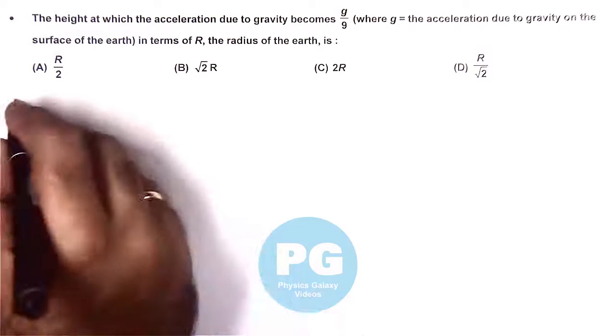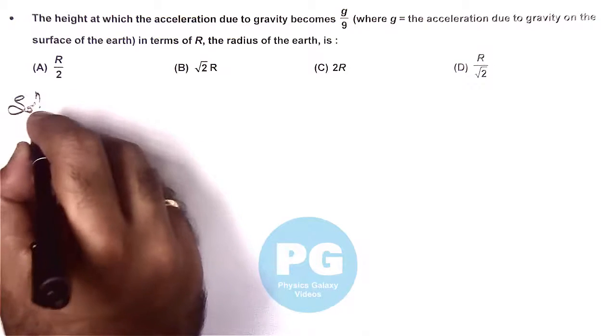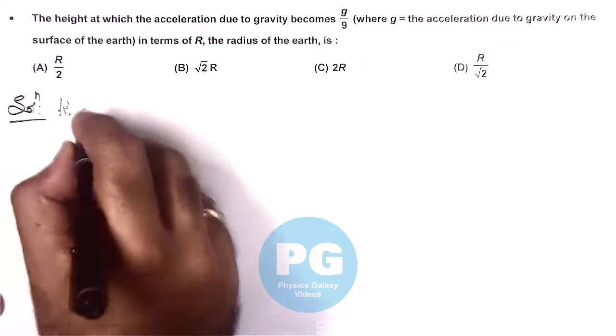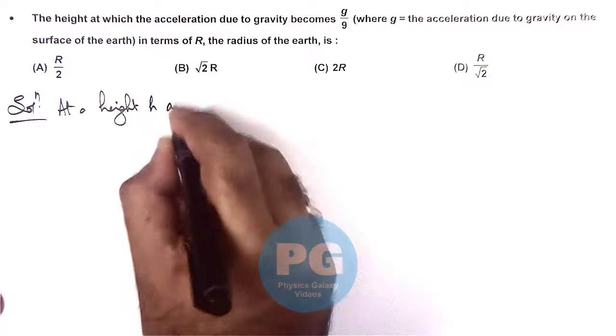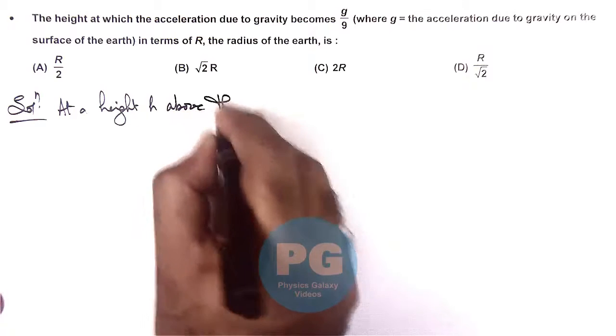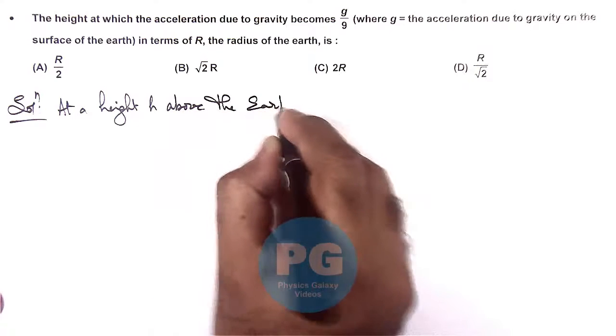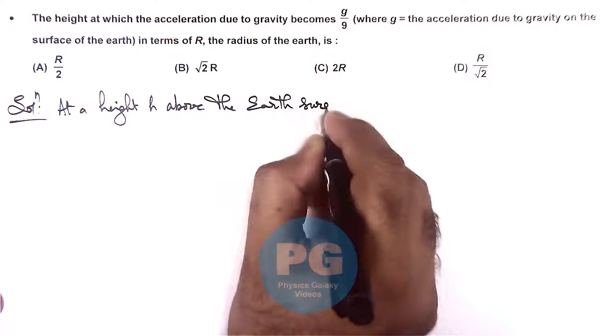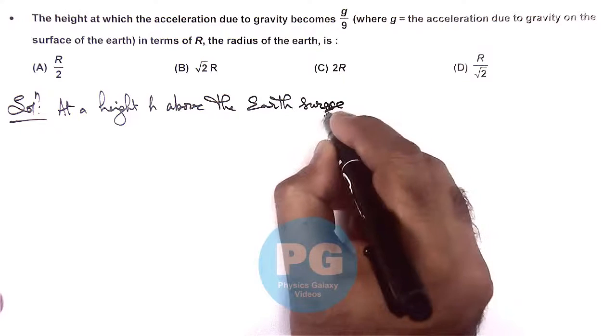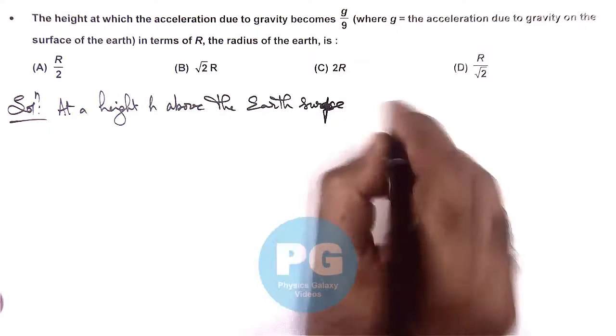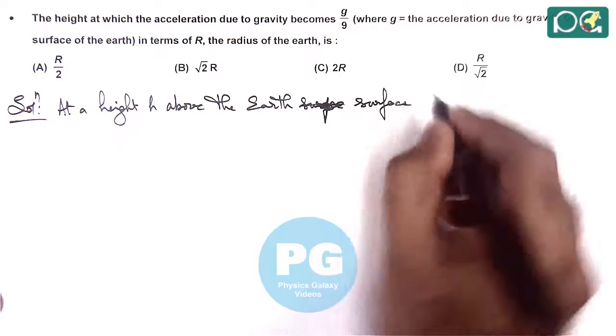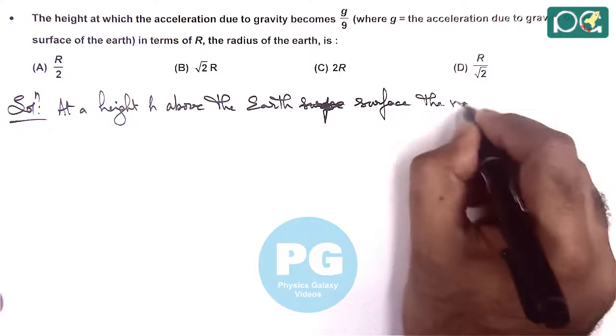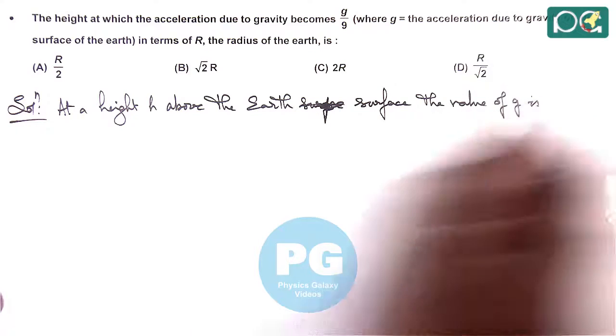the radius of earth. So we already discussed at a height h above the earth's surface, the value of g is given as